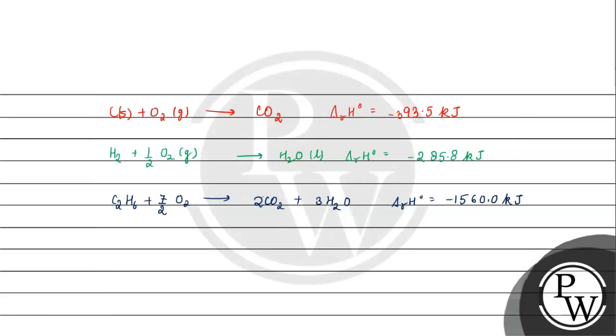Now, what do we need? We need to combine carbon and hydrogen. We need to eliminate oxygen, carbon dioxide, and water. And we need the enthalpy of formation of ethane. So on the product side, ethane must be present. We need to reverse the third reaction, and when we reverse it, the sign will change.